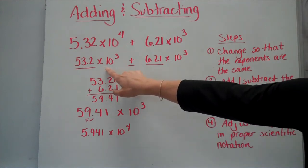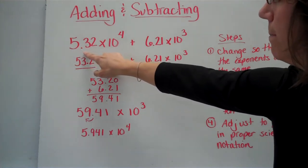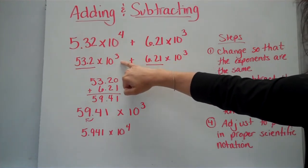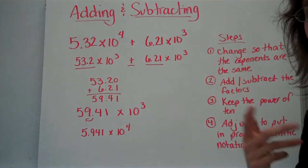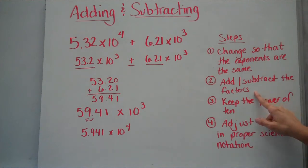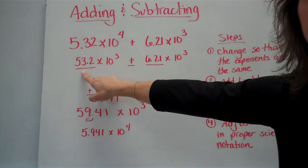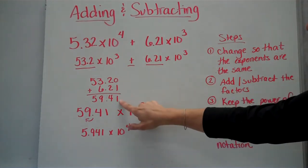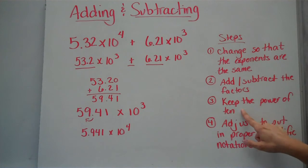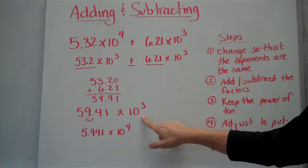You can see here that I chose to do this one and make this one a power of 3. So I moved my decimal point back one space, which made me subtract one from my exponent. Now, they are both powers of raised to the power of 3. So now I'm going to add or subtract my factors according to the problem. Here we're adding. So I'm going to add the now 53.2 with the 6.21. You're going to keep whatever power of 10 that you tried to make the same. Here we put them both as 10 to the third power, so we're going to keep it as 10 to the third power.